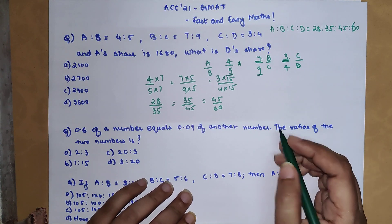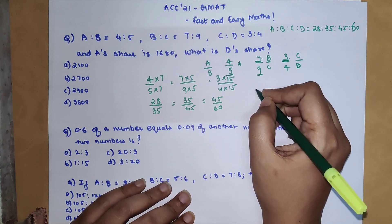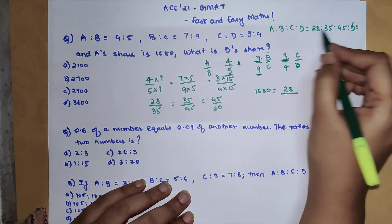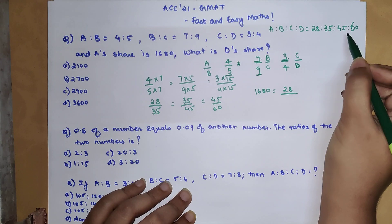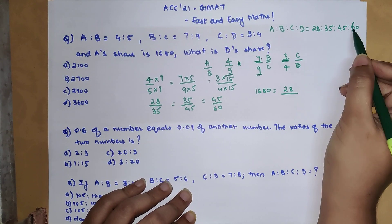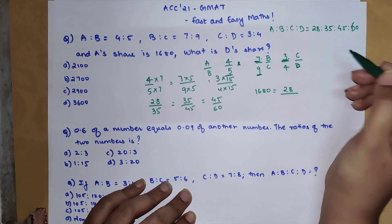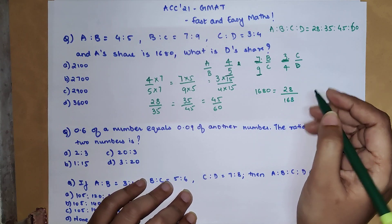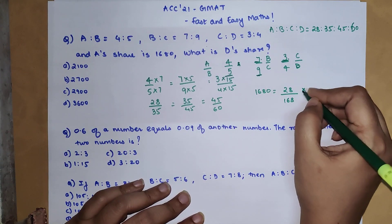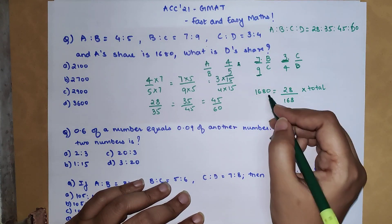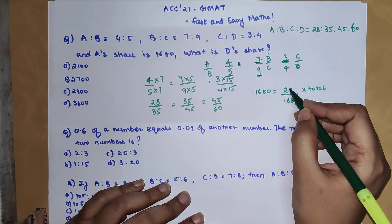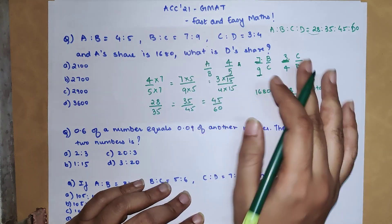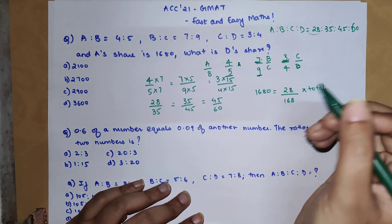We know A's share is 1680. A's share equals 28 upon the total of all parts multiplied by the total sum. The total of all parts is 28 plus 35 plus 45 plus 60. Adding: 45 plus 35 is 80, 80 plus 60 is 140, 140 plus 28 is 168. So the denominator is 168, and we can find the total sum from here.